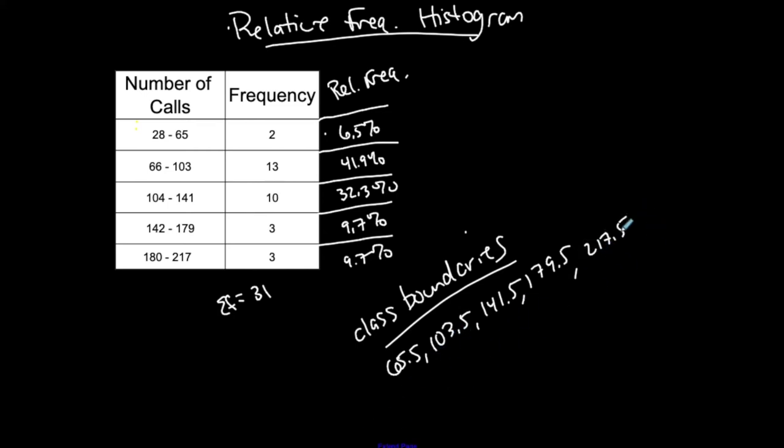And then the difference between each of these should be 38 because that's the class width. So I could subtract 38 from here or imagine there was an upper class limit of this class that's not necessarily here. An imaginary class would be 27. So between 27 and 28 would be my lower class boundary of my first class. So I should have 1, 2, 3, 4, 5, 6 class boundaries for a frequency table of 5 classes.